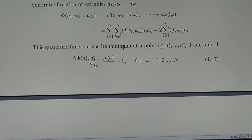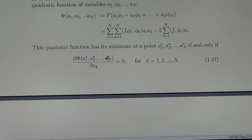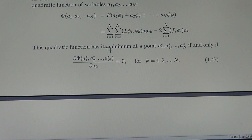This quadratic function has a minimum because the inner products of these elements create a matrix which is positive definite. The quadratic function attains a minimum if and only if the partial derivatives with respect to A_K are zero. This necessary condition, in the case of a quadratic function, is also the sufficient condition for the existence of a minimum.